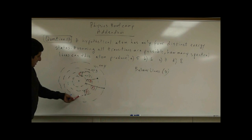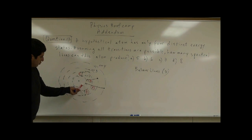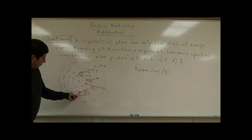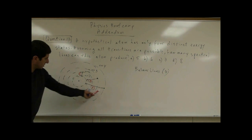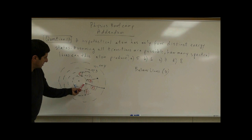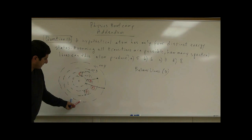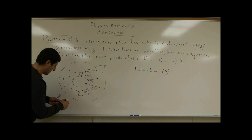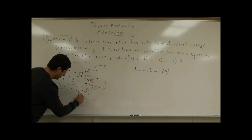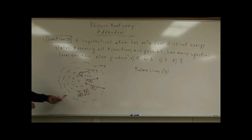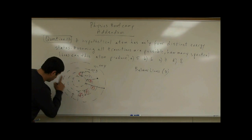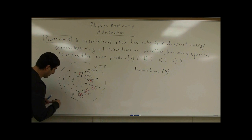Then from n equals 4 down to n equals 2 — that's the fifth possible jump. And then from n equals 4 down to n equals 3 — that's the sixth possible jump.